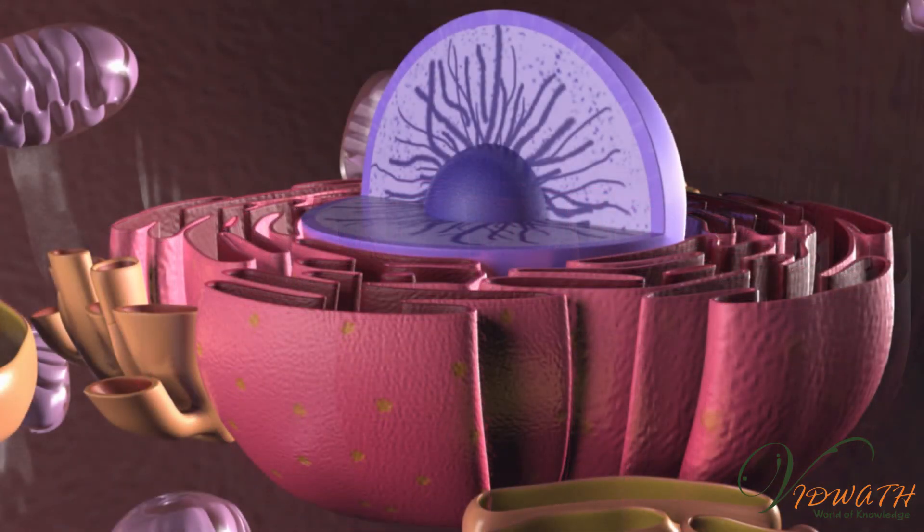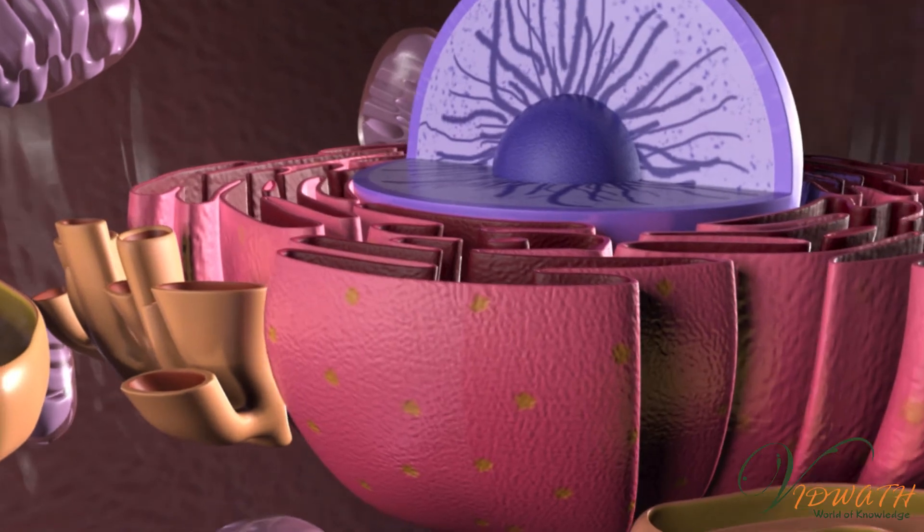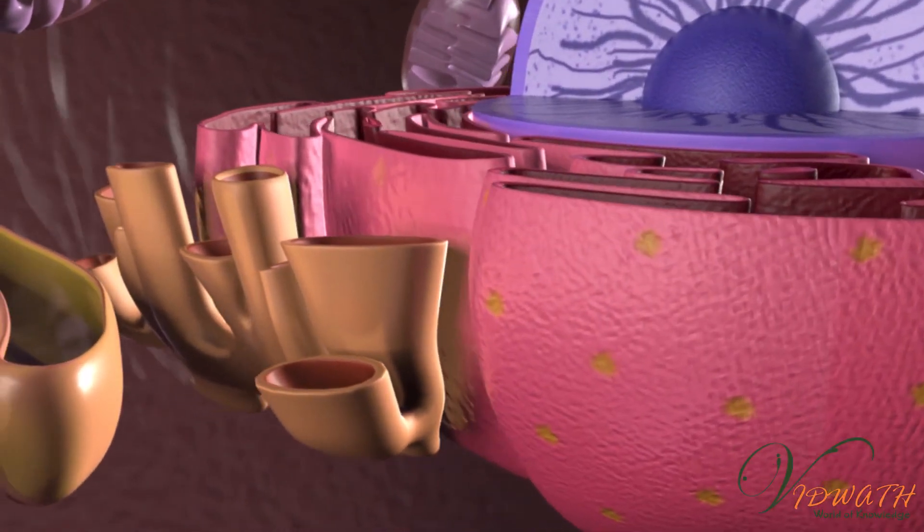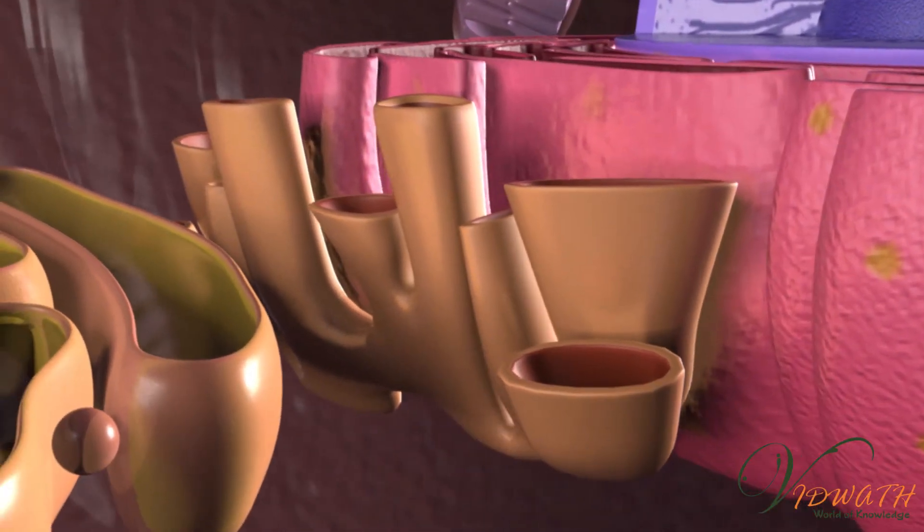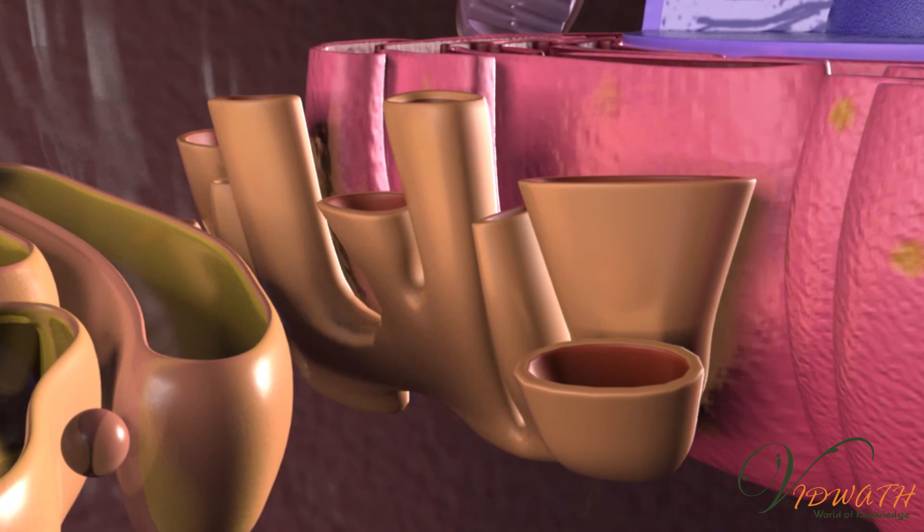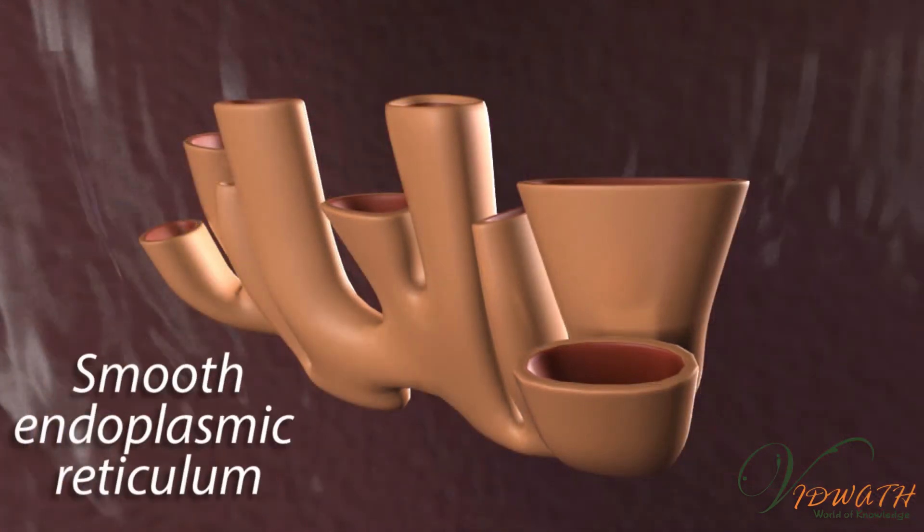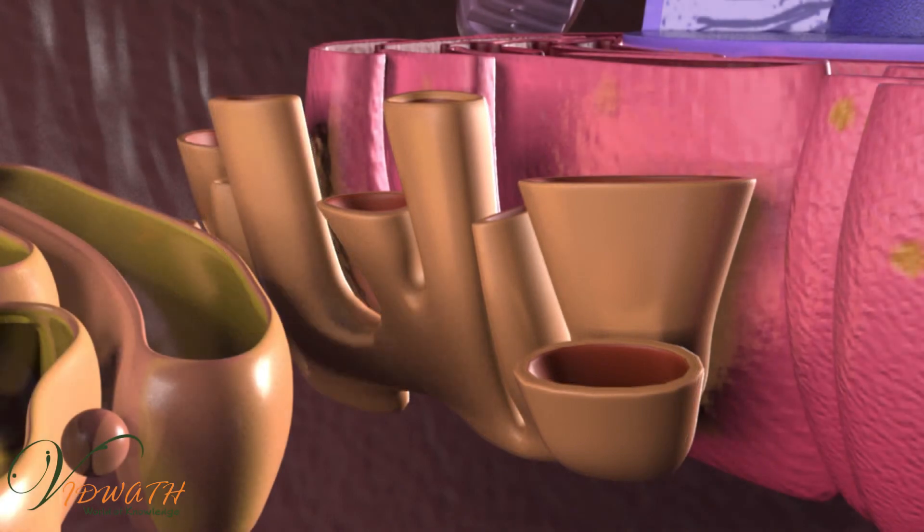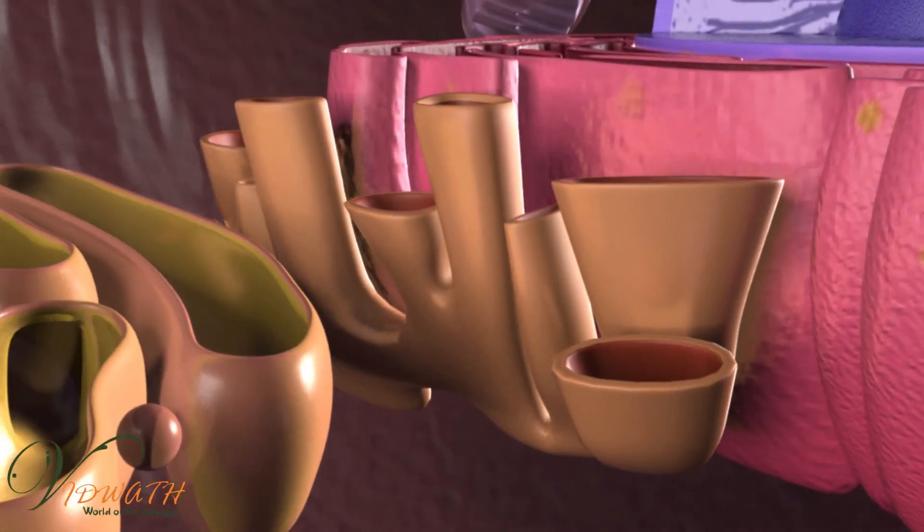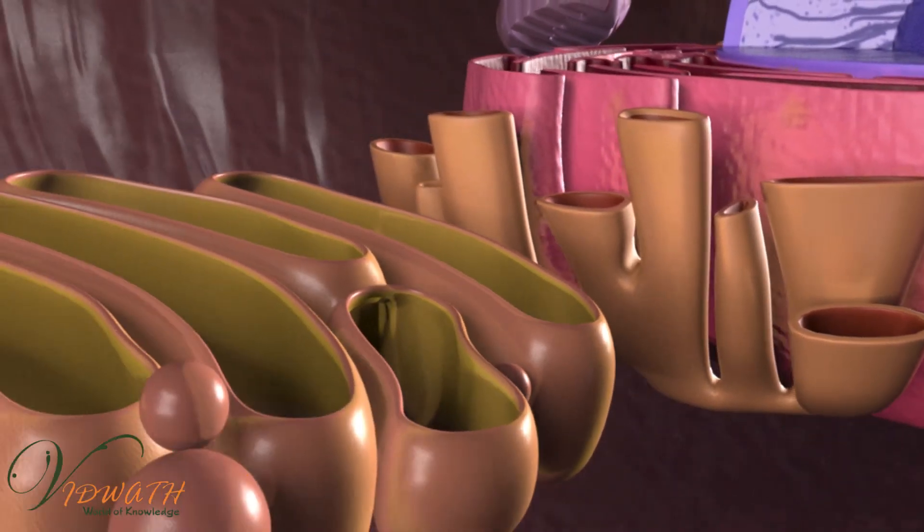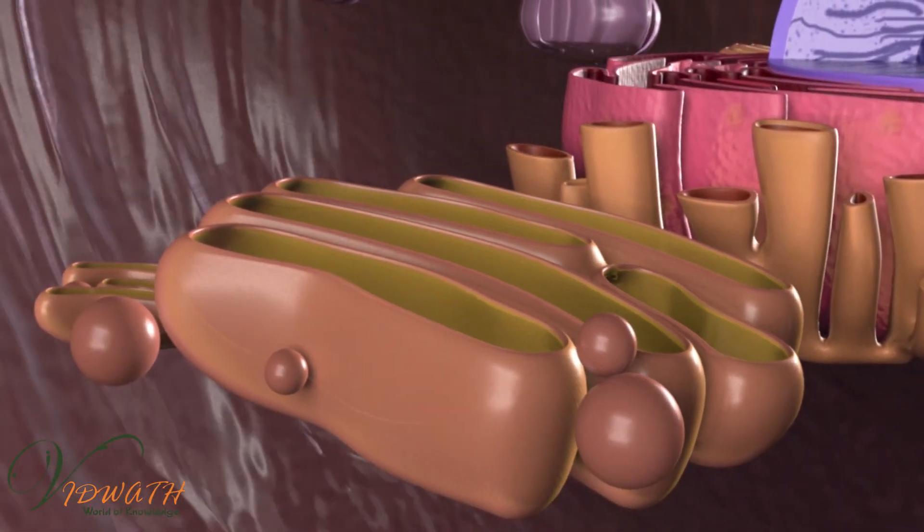Smooth endoplasmic reticulum functions in the synthesis of lipids, detoxification of drugs and poisons, storage of calcium ions, and metabolism of carbohydrates. In contrast to the rough endoplasmic reticulum, the smooth ER is not studded with proteins.